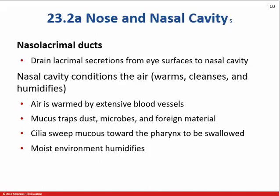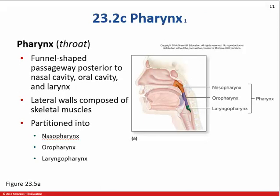Moist air is better for diffusion of gases than dry air. Right behind the nasal cavity is the nasopharynx, a funnel-shaped pathway above the soft palate and uvula. The nasopharynx has the same epithelium as the nose — pseudostratified ciliated epithelium. There's a small tonsil there called the adenoids, and two passageways that go behind the ears called the eustachian tubes.